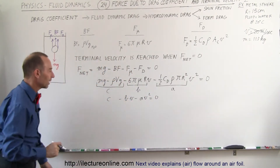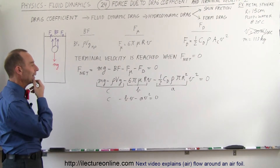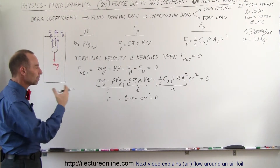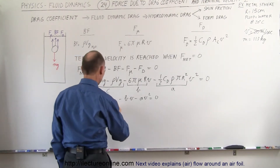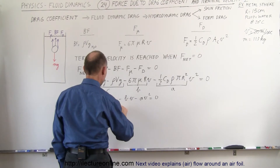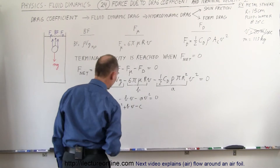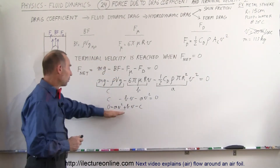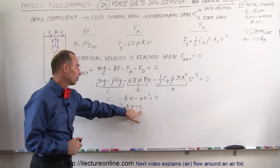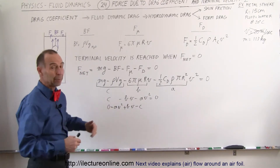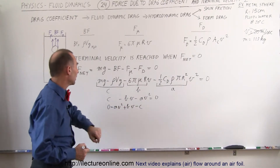We're going to solve this as a quadratic equation. Rearranging the signs, we rewrite it in standard form: 0 = AV² + BV − C. Now we need to identify what A, B, and C are equal to, then apply the quadratic formula to solve for the terminal velocity.